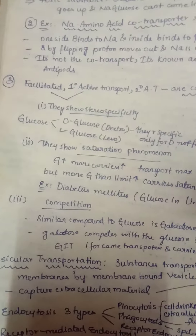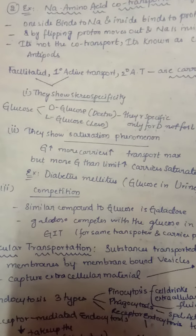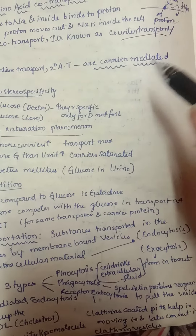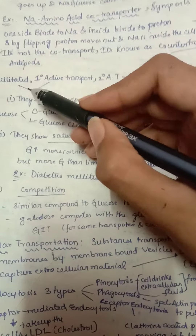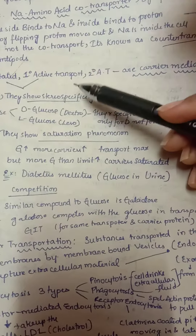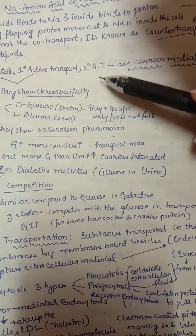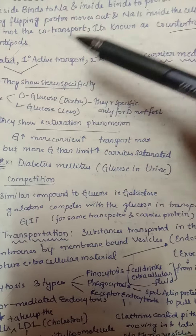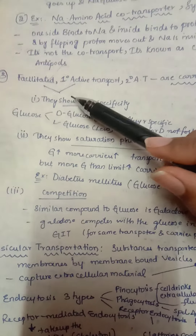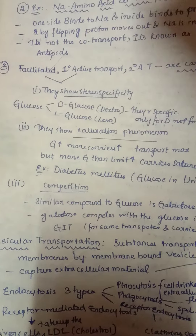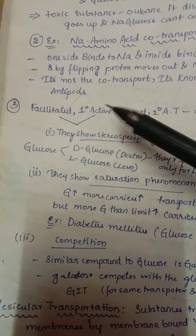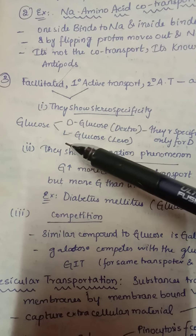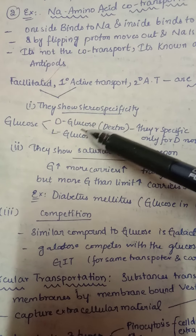Facilitated diffusion, primary active transport, and secondary active transport are all carrier-mediated — they all need a carrier. Facilitated diffusion and primary active transport show stereospecificity. For example, glucose is divided into D-glucose and L-glucose; the carriers are specific only for D-glucose and not L-glucose.